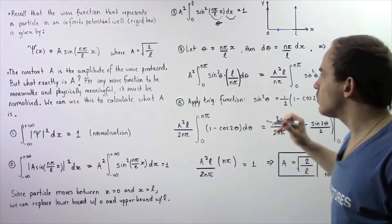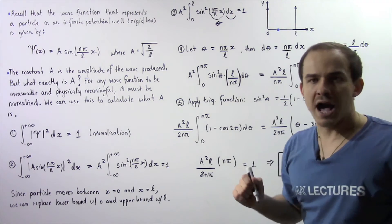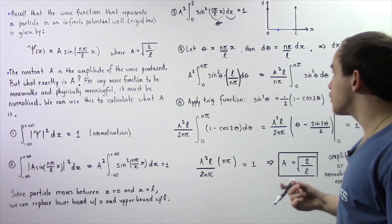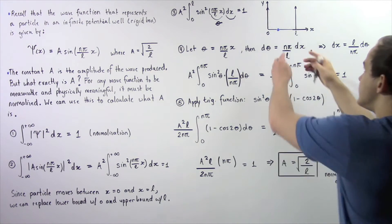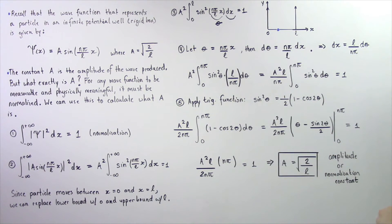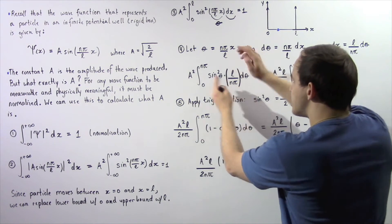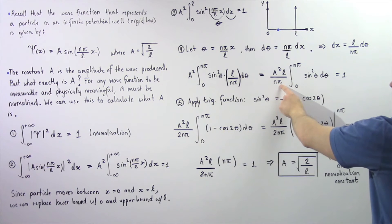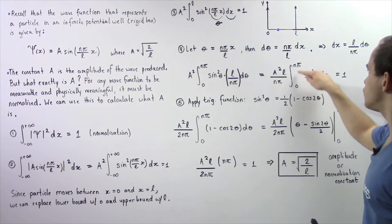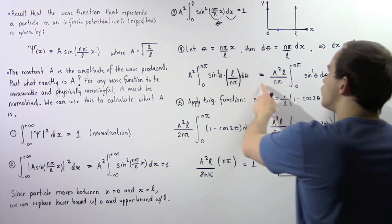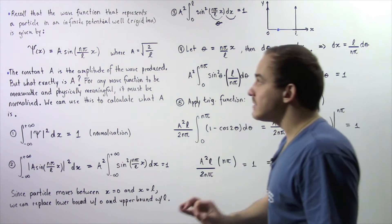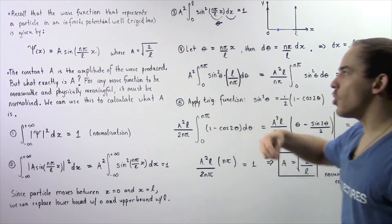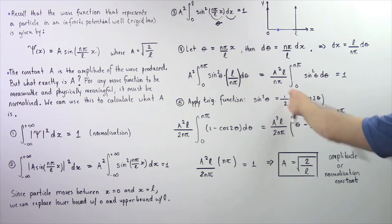Notice the lower bound stays at 0 and the upper bound is now n multiplied by π. This comes from the fact that sine of n times π, where n is a positive integer, is always equal to 0, meaning our particle cannot go above L or below 0. Bringing the constants outside the integral, we have A squared multiplied by L divided by nπ, multiplied by the integral from 0 to nπ of sine squared θ dθ, equal to 1. Here, A is the normalization constant, L is the width of the rigid box, and n is the quantum number.